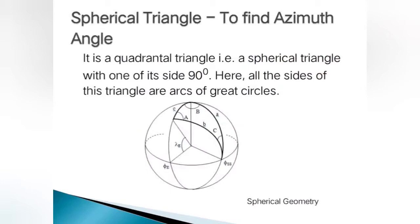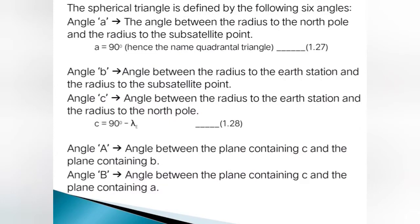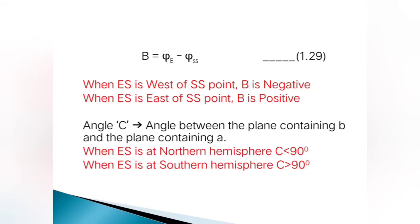For the spherical triangle, it is a quadrantal triangle — that is, a spherical triangle with one of its sides equal to 90 degrees. All the sides of this triangle are arcs of great circles. The spherical triangle is defined by the following six angles: small a, small b, small c, and capital A, capital B, and capital C.